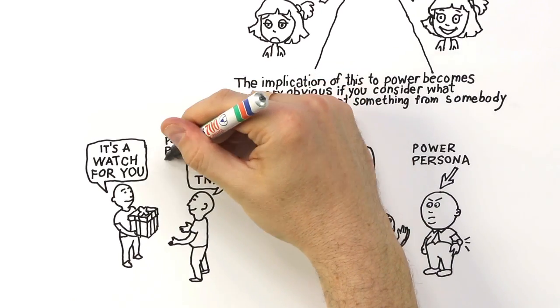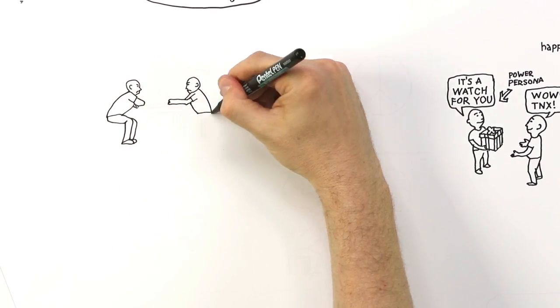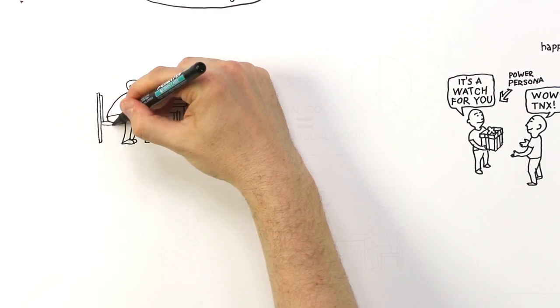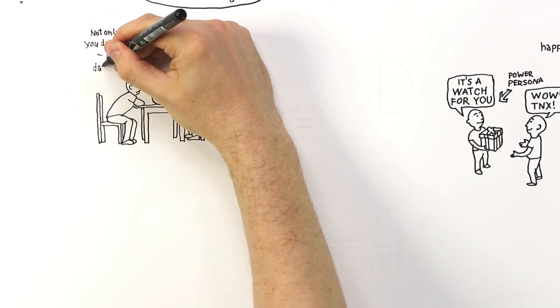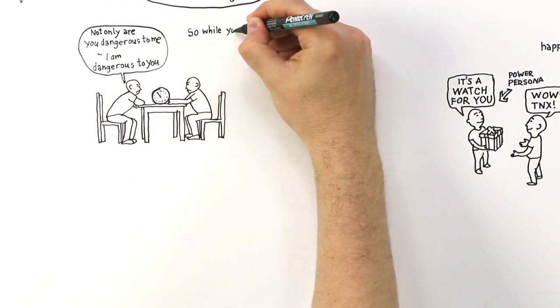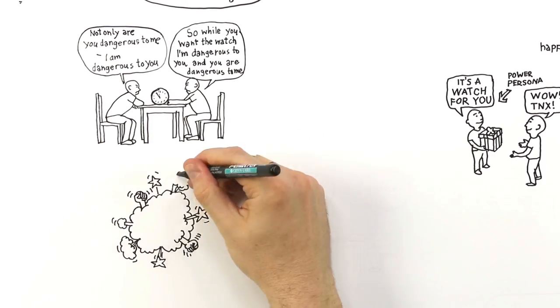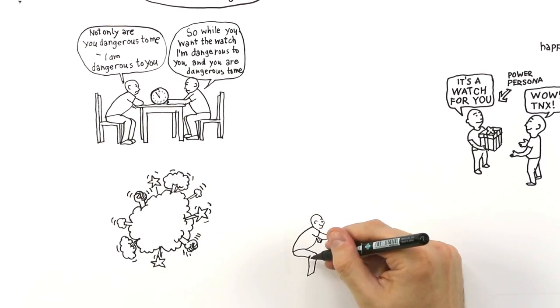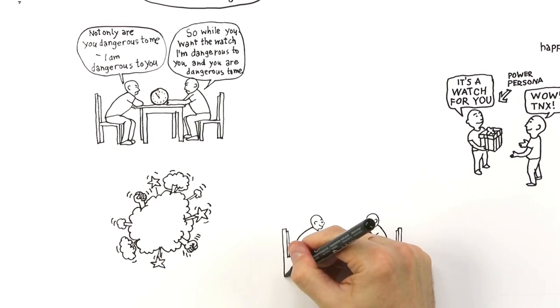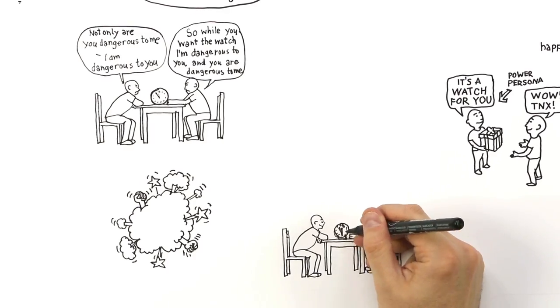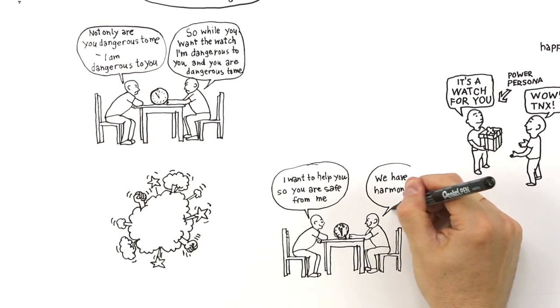This is true in any context. It's true in any transaction. This has implications for harmony too. Your ability to withhold your watch gives you power over me. You can manipulate me and that makes you dangerous to me. But not only are you dangerous to me, but precisely because I'm trying to get something out of you, I'm dangerous to you. So while I want the watch, you are dangerous to me and I'm dangerous to you. And because we are dangerous to each other, we are going to have conflict. On the other hand, if I shift my intent in the engagement from what I'm trying to get from you to how I can be helpful, then first of all, you can't withhold the watch. So you lose your power over me and I'm safe from you. But precisely because I want to be helpful to you, you're safe from me. And if I'm safe from you and you're safe from me, we have harmony.